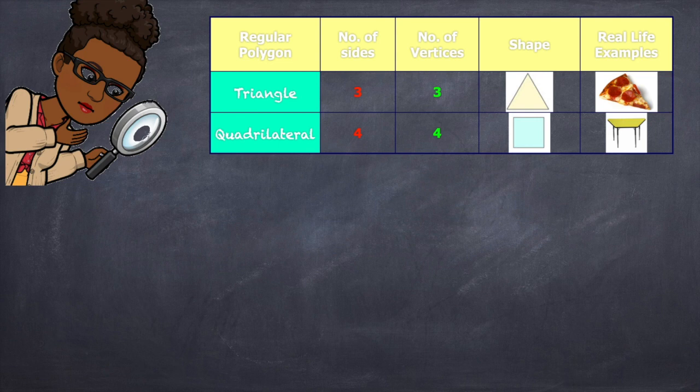Let's look at quadrilateral. The word quad means four. Therefore, it has four sides and four vertices. I'm sure you've seen that before. We've all seen those in our schools. That's a real life example of a quadrilateral.